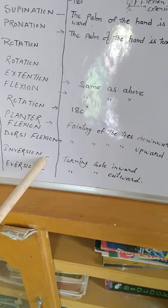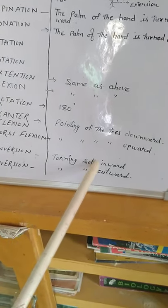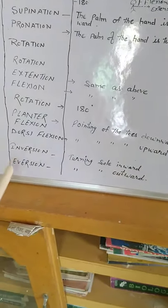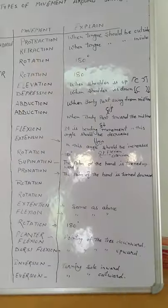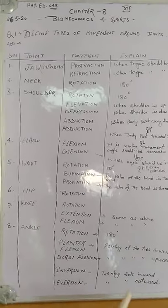Next is inversion. Inversion means turning sole inward. And aversion means turning sole outward. Now these are the movements around the joints.